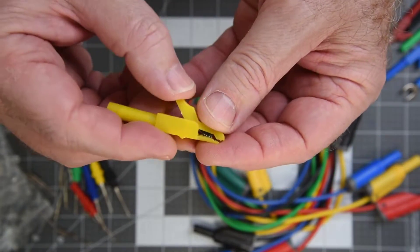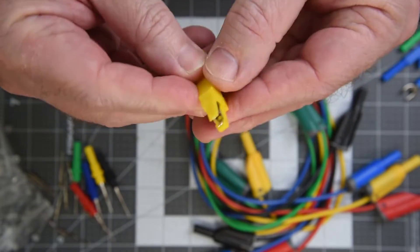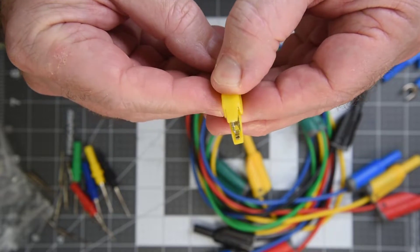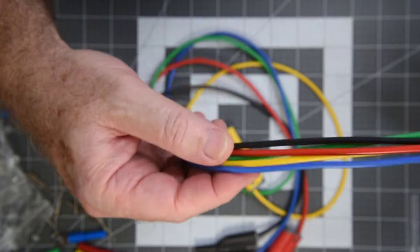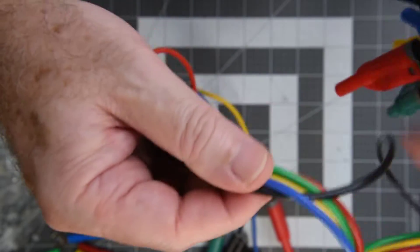The alligator clips are the cheapest feeling items in this kit, made of really thin metal. The wire is very nice feeling and very flexible, almost assuredly silicon.